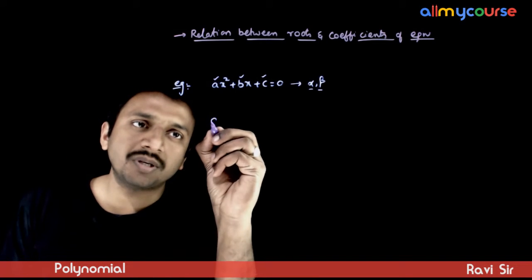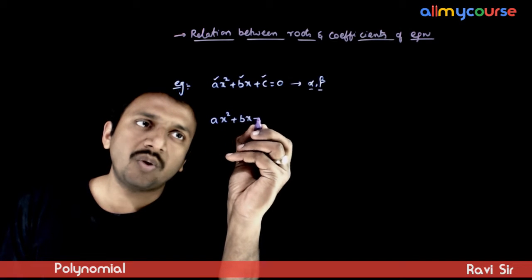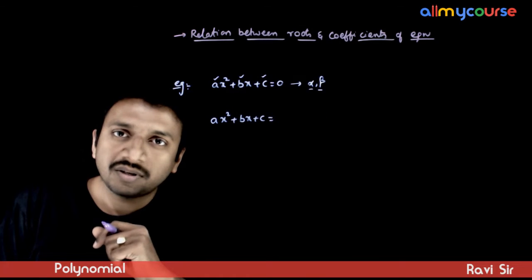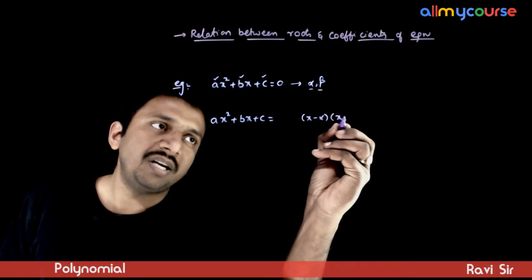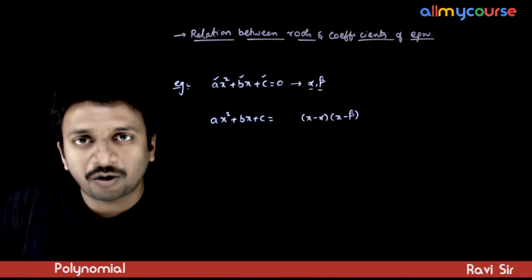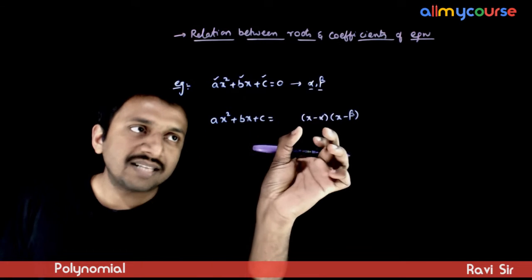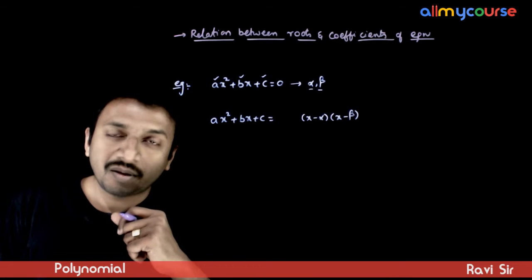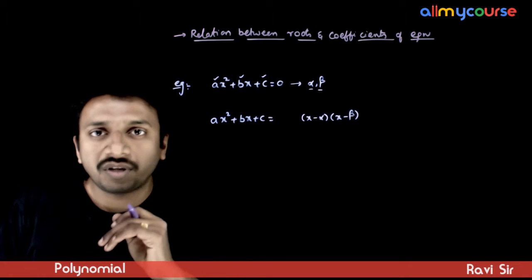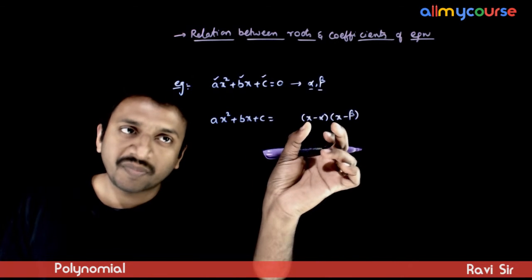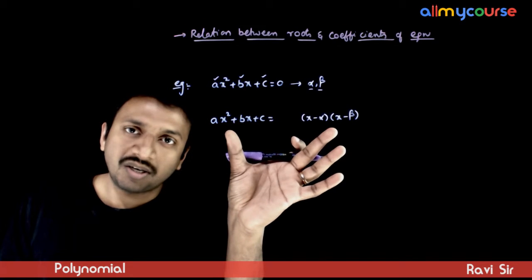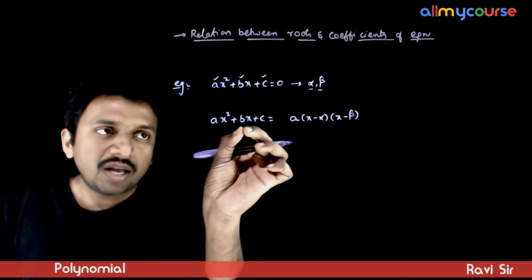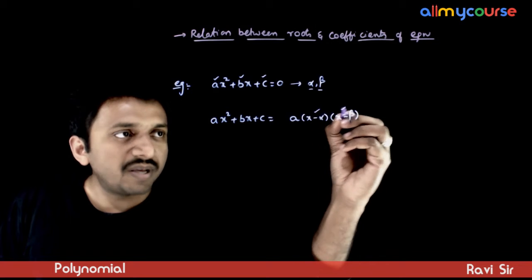To understand this, let us do some simplification. ax squared plus bx plus c can be written as follows: since alpha and beta are the roots of this equation, x minus alpha and x minus beta are the factors of this polynomial. If you write this as (x minus alpha)(x minus beta), for these two sides to be equal, you need to equate at least one coefficient. You have x squared here and ax squared there, so you just need to put an a here. So ax squared plus bx plus c has two linear factors, written as a times (x minus alpha)(x minus beta).